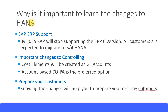Why is it important to learn the changes to S4HANA? There are many important reasons for that. Three prominent reasons are highlighted here. First is SAP ERP support — SAP has announced that by 2025, it will stop supporting the ERP 6 version, and all customers are expected to migrate to S4HANA by then.